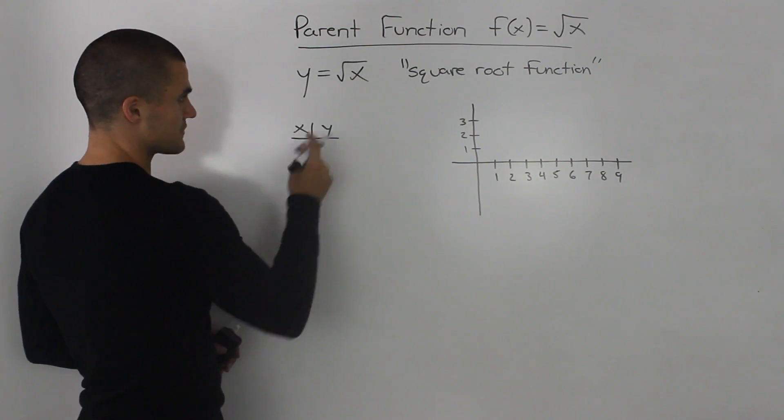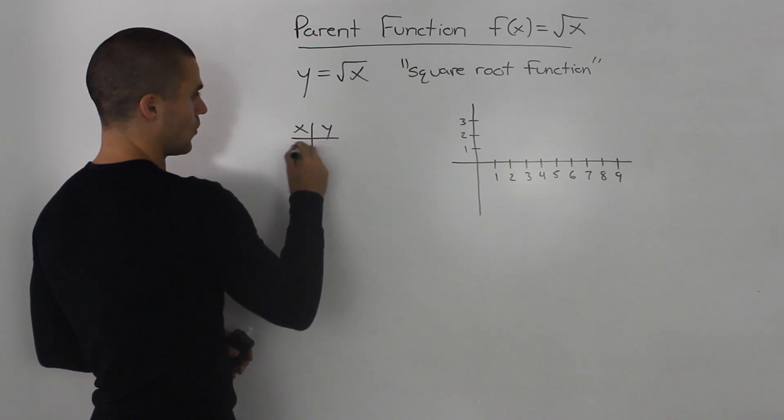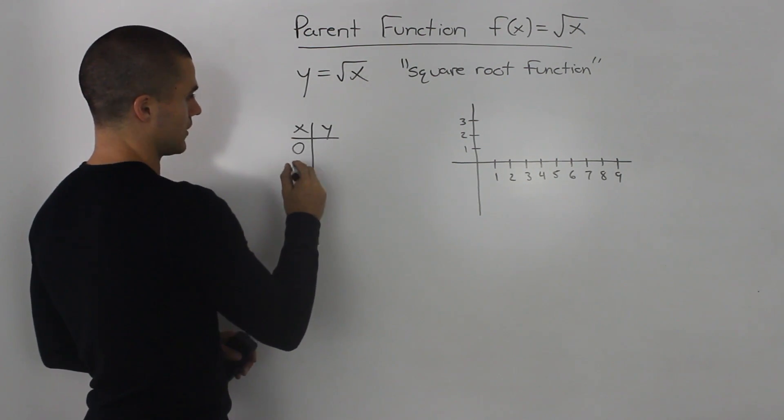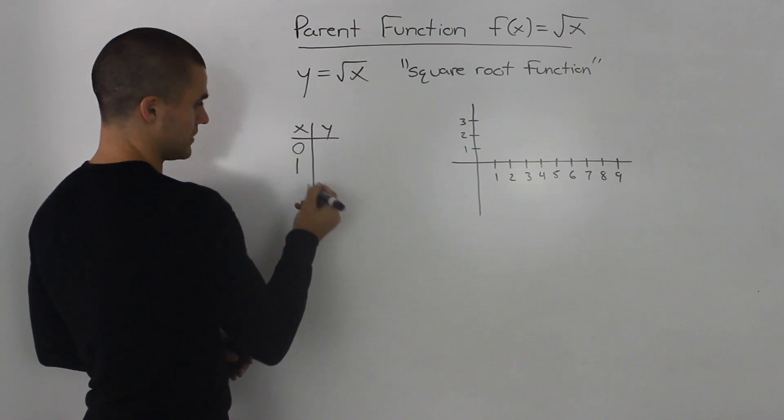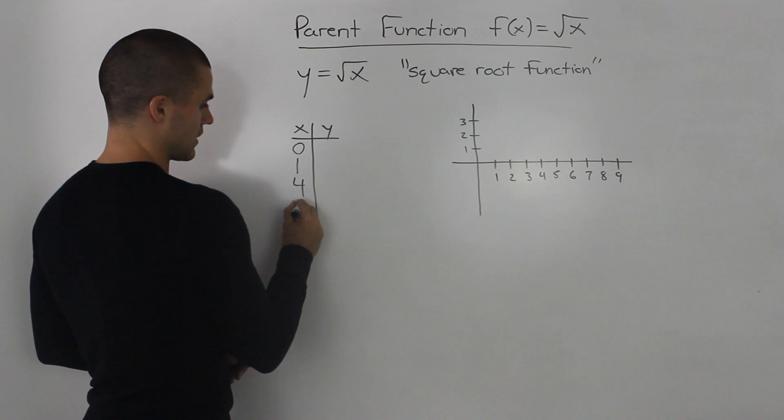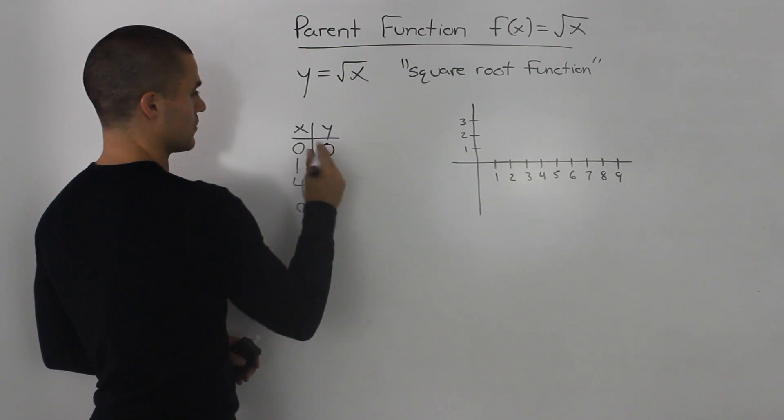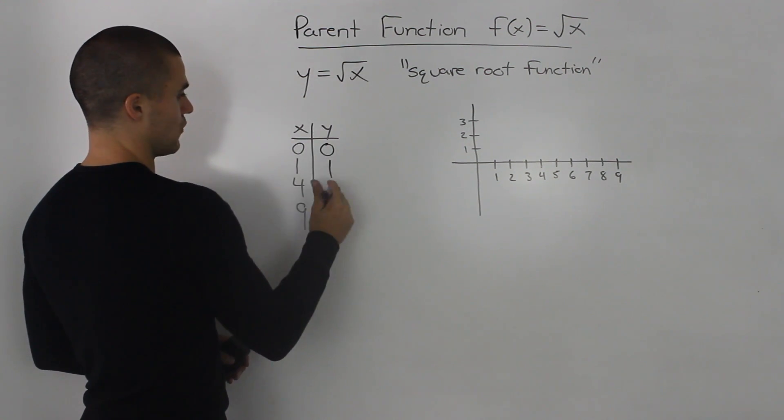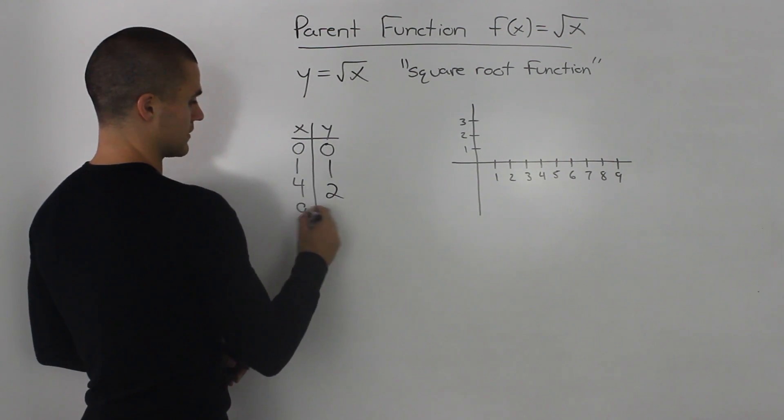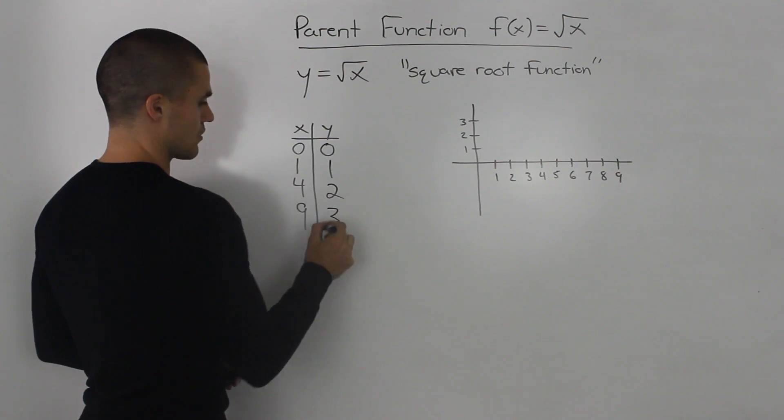So let's pick some x values for which the y values will be integers. So 0 would be one, 1 would be another, 4, and then let's just do 9 here. So the square root of 0 is 0, the square root of 1 is 1, the square root of 4 is 2, and the square root of 9 is 3.